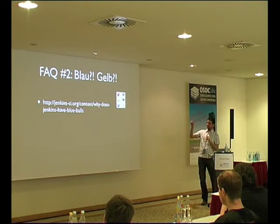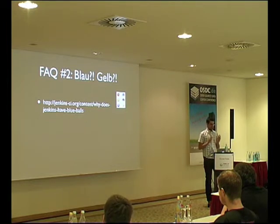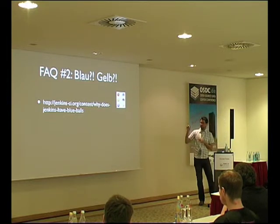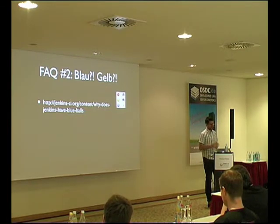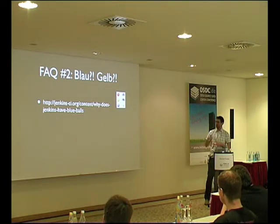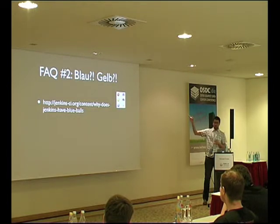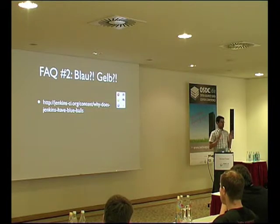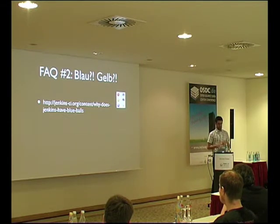Die nächste Frage: Im Jenkins gibt es Blau und Gelb – was soll das eigentlich sein? Das kommt daher, dass in Japan Rot Stop bedeutet und Blau dieses Go ist, quasi das Über-die-Ampel-Gehen. Blau sagt: wir sind gut, alles ist in Ordnung, wir können das rausliefern. Rot ist quasi der Abbruch – da gibt es ein Kriterium, das uns definitiv davon abhält, das in Produktionsbetrieb zu nehmen. Gelb heißt: irgendwelche Kriterien sind nicht erfüllt, aber man kann es vielleicht trotzdem hinausliefern.